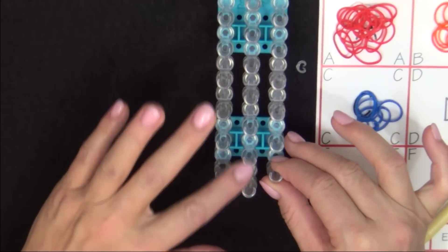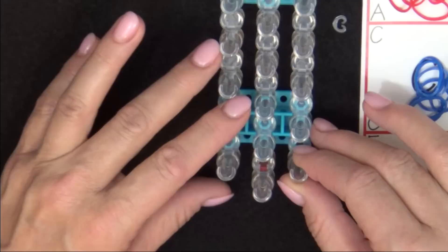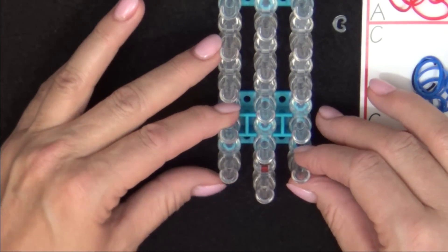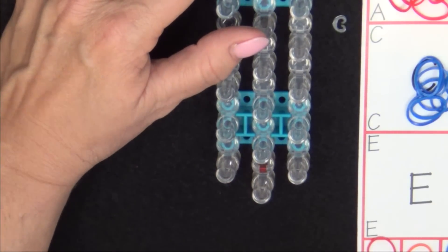Place your loom so that the red arrow is pointing away from you. Start by placing the first 10 bands on the loom.